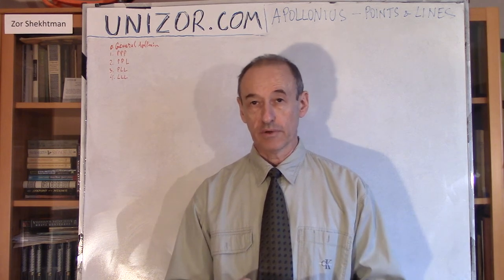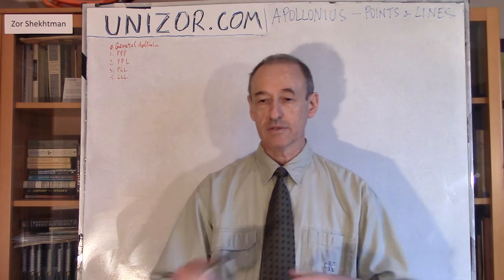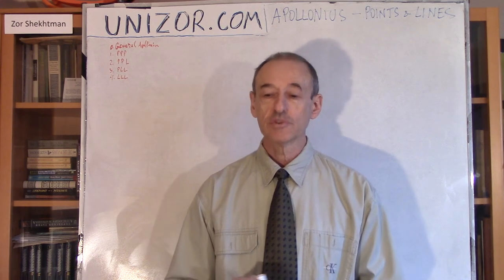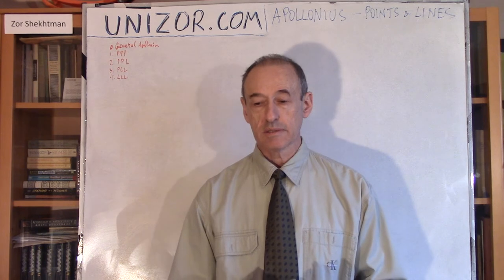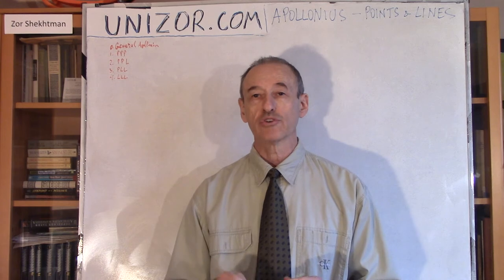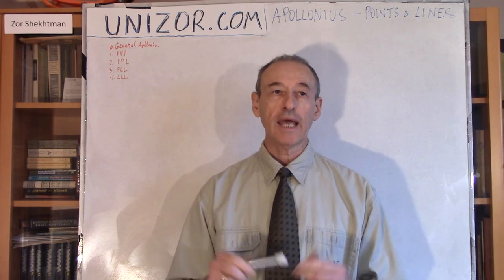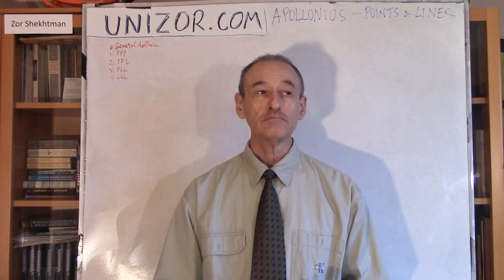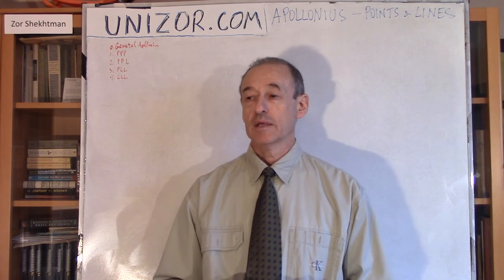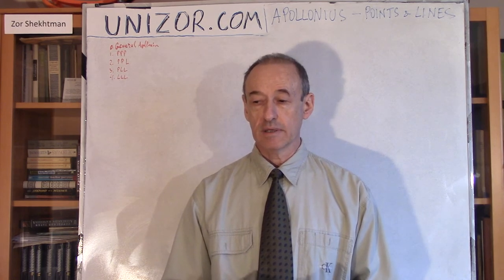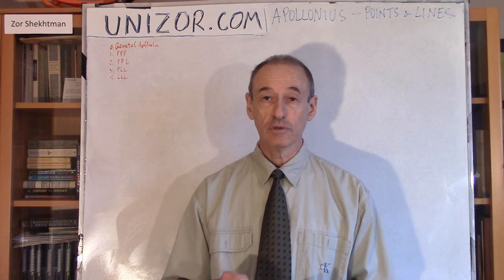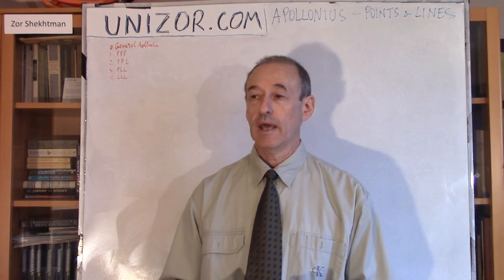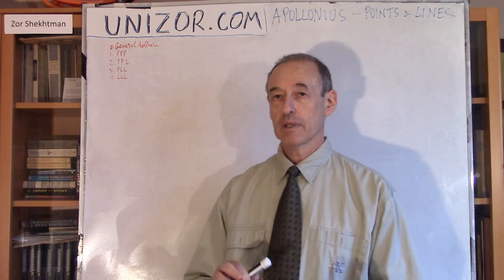Obviously there are many different cases: point-point-point, point-line-circle, circle-line-circle, and so on. We will try to address all of them. Why I think this is a very interesting topic is because in certain cases it leads to the introduction of a new transformation on the plane. What we had before as far as plane transformations were transformations of symmetry and scaling, which leads to similarity. This new type of transformation is called inversion, or symmetry relative to a circle, and that will be the subject of our next lecture. This lecture is about the simpler cases of Apollonius' problems.